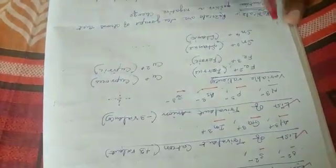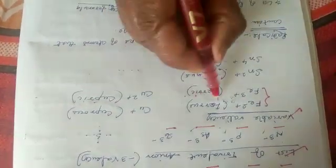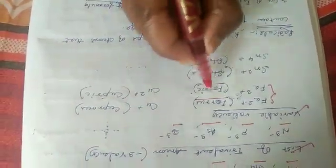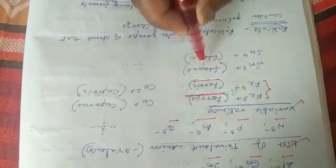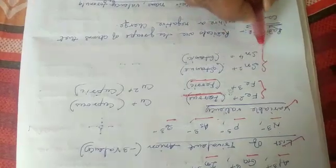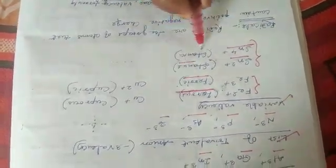Now there are some elements which show variable valency. For example, Fe2+ and Fe3+, that is ferrous and ferric. Lower valency is called -ous and higher valency is called -ic. Similarly, Sn2+ and Sn4+, stannous and stannic. Similarly, cuprous and cupric.